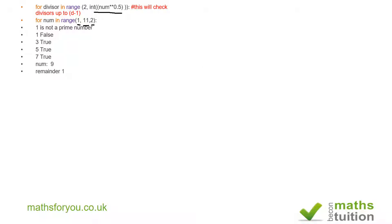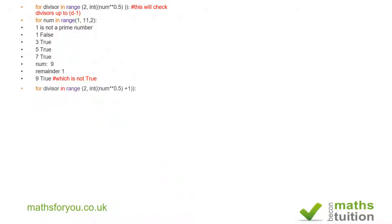There's an issue with nine: the maximum divisor being checked is only three, so the code only divides by two and not three. It gets a remainder of one when dividing by two, so it incorrectly says nine is a prime number — which is wrong. To fix this, you add one to the square root so that three is included in the range.